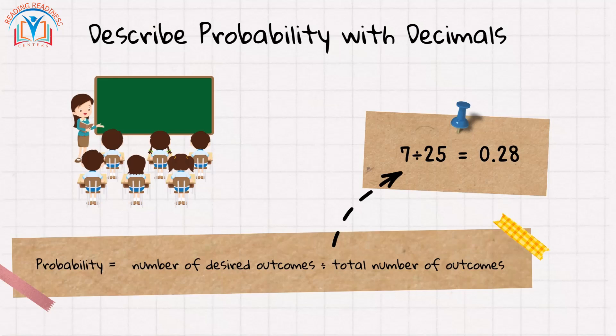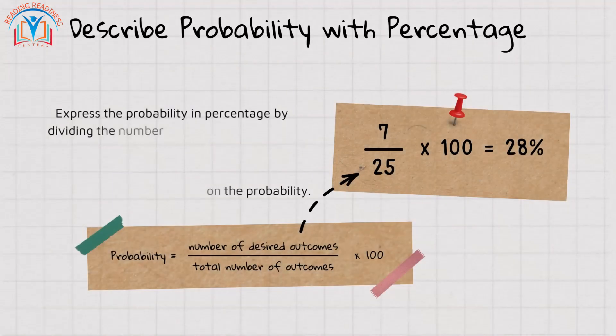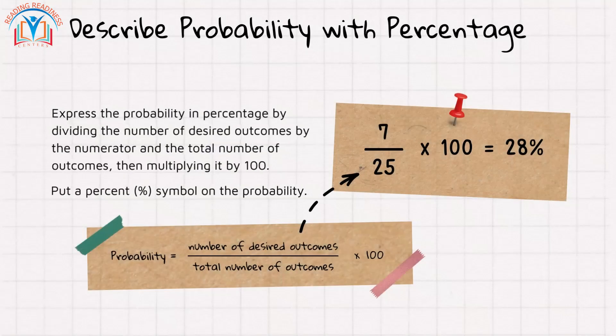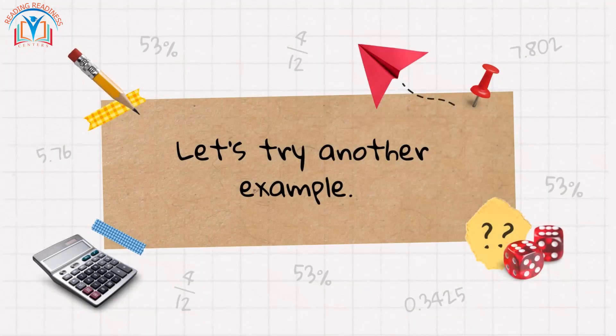So seven divided by 25 equals 0.28. To express it as a percentage, divide the number of desired outcomes by the total number of outcomes, then multiply by 100. Put a percent symbol on the probability and the answer will be 28%.